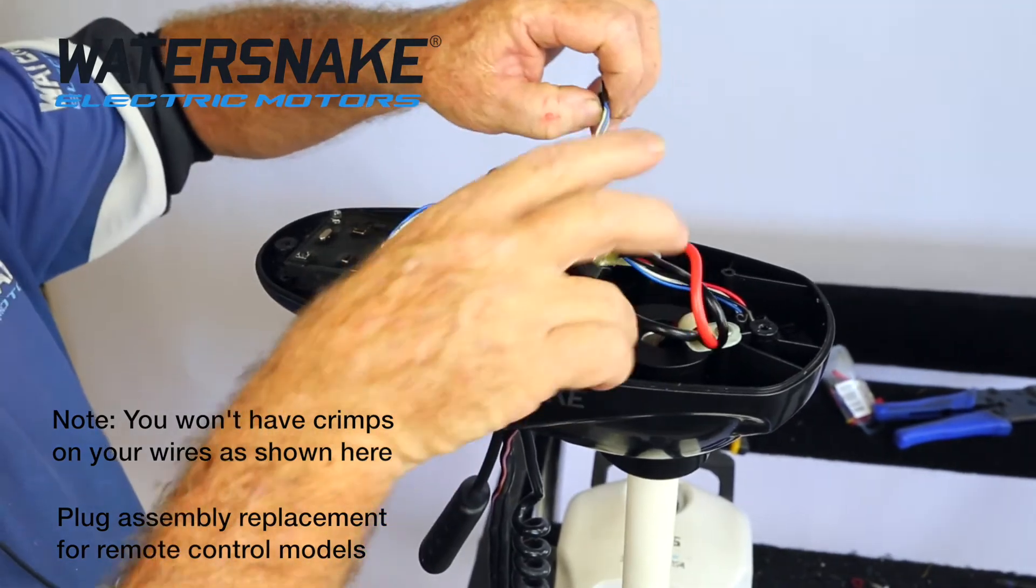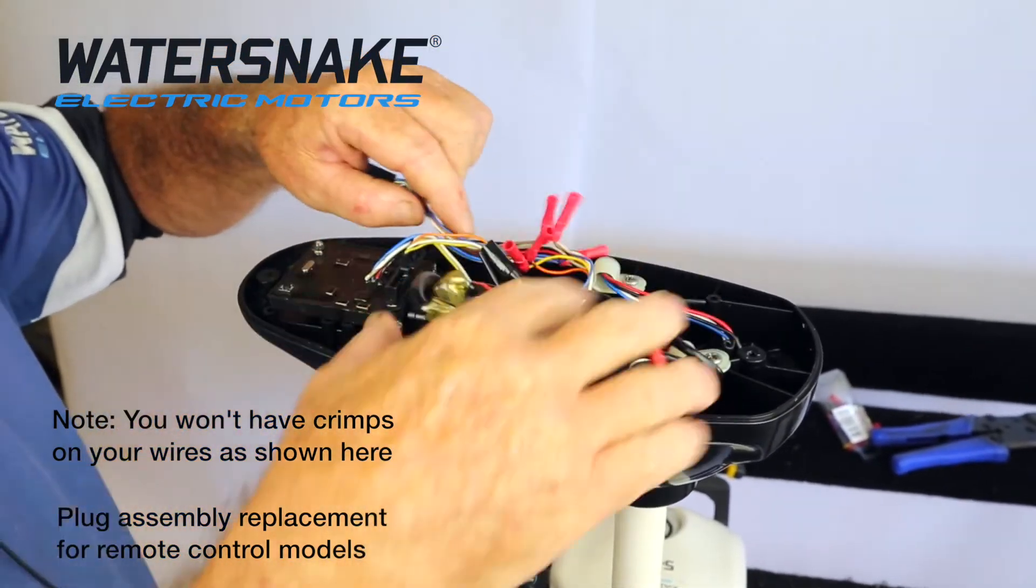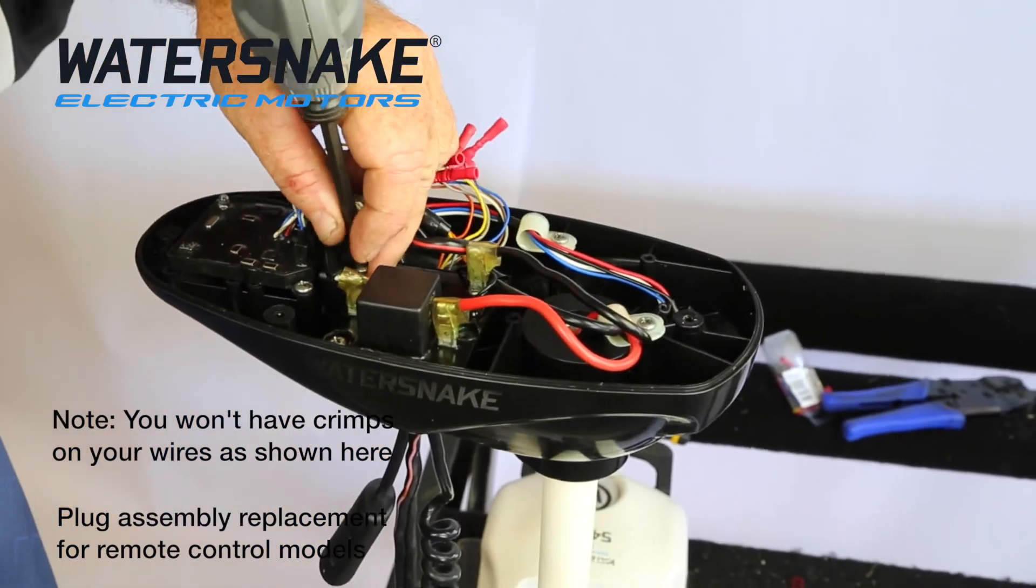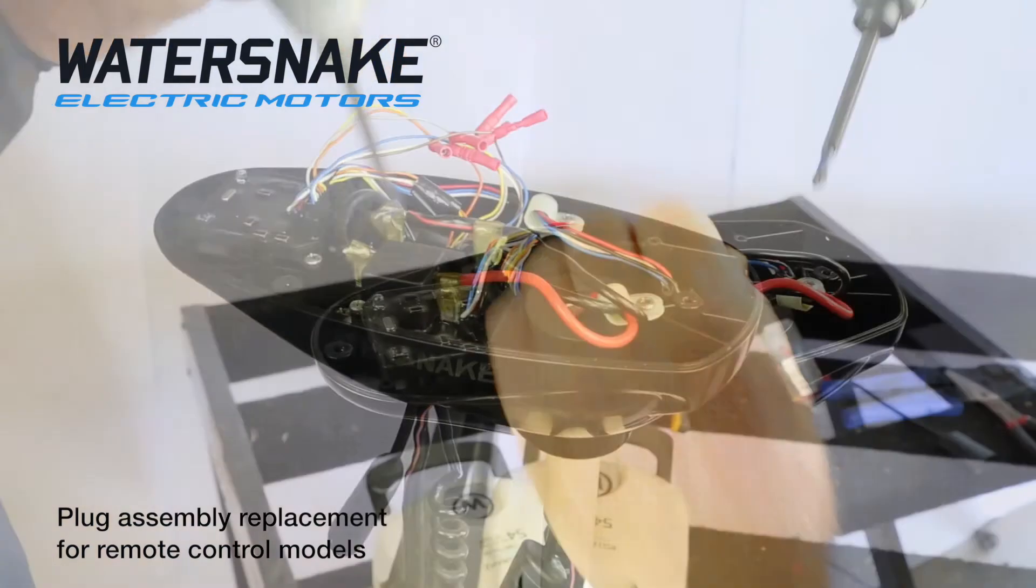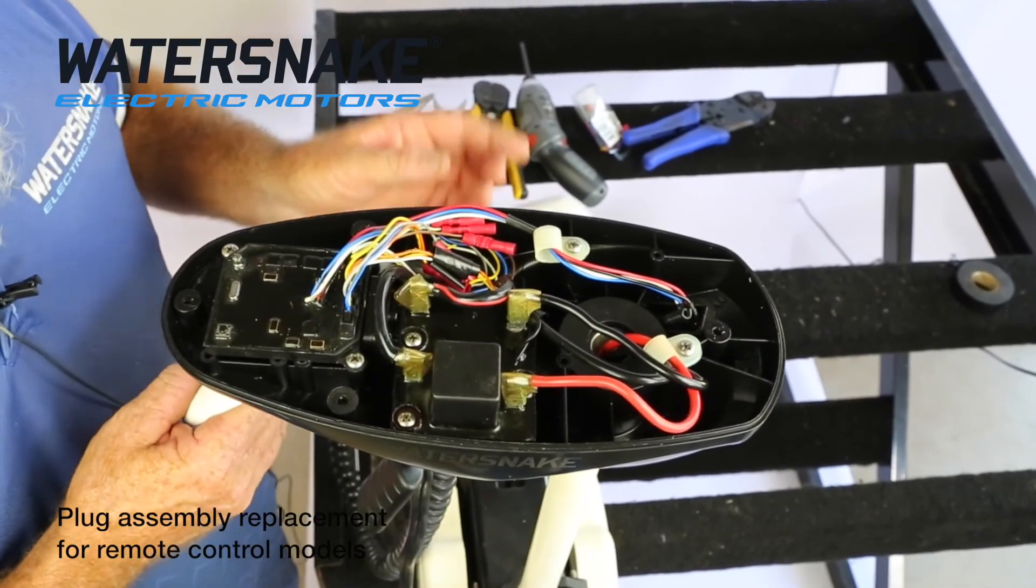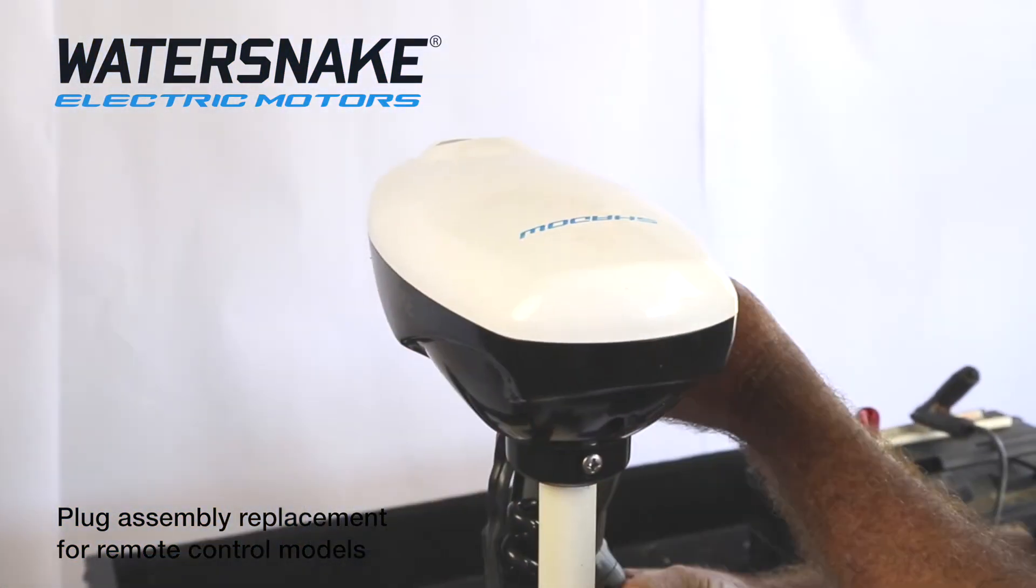Plug it back in and then start to reassemble your three screws back into your circuit board. Now that you've joined them all together and pushed them down, just put your lid back on, tighten your four screws up, and it's done.